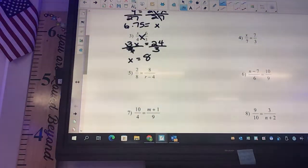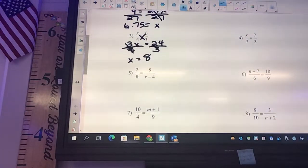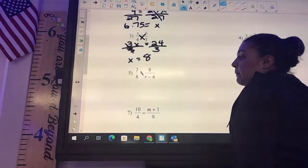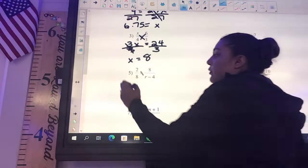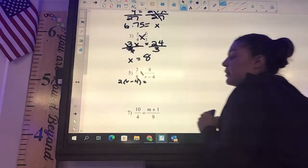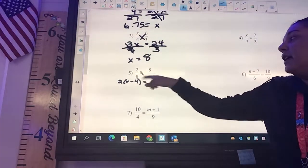The ones that are like this, where they have something with it, you need to use that parentheses and distribute. So you're going to say 2 times r minus 4, so it really looks like 2 times (r minus 4). You need to make sure that you times that 2 by each piece. And you really don't have to write it all out.